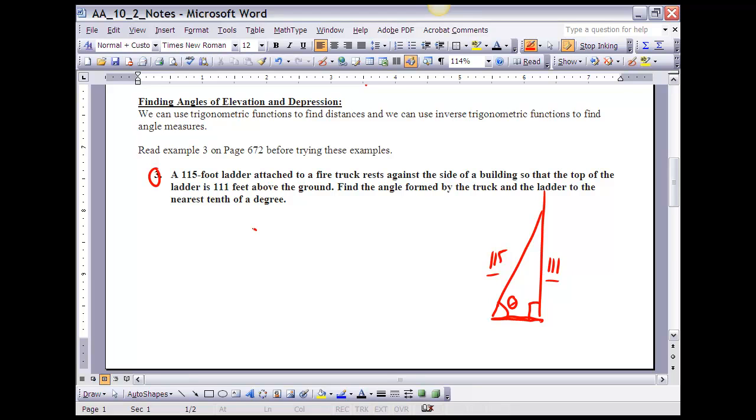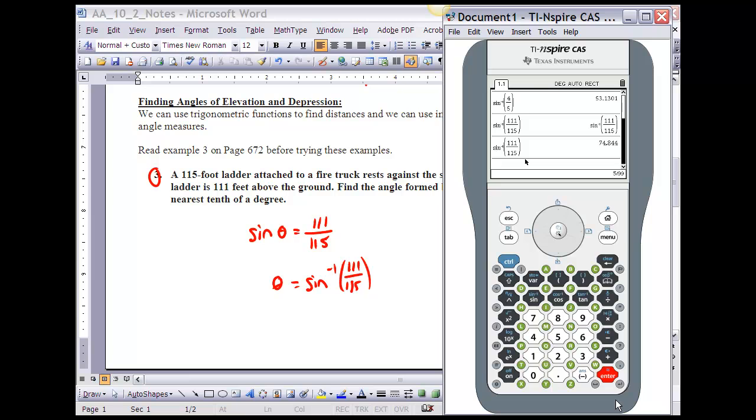the trigonometric ratio that relates the opposite and the hypotenuse is sine. So, what I'm going to do is I'm going to say the sine of theta is equal to the opposite, 111, over the adjacent, 115. So, to solve that equation for theta, that means I'm going to take the inverse sine of both sides, and if I do that, the inverse sine of the sine of theta is just theta, and then over here I have the inverse sine of 111 over 115. So, that's what I'm going to be putting into my calculator then. So, it's about 74.8 degrees.